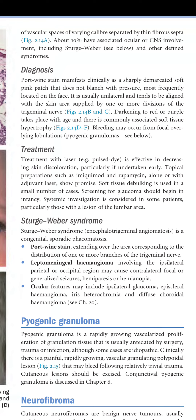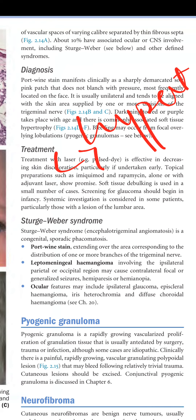Laser is the treatment of choice for port wine stain. Topical preparations such as imiquimod and rapamycin, alone or with adjuvant laser, show promising results. Soft tissue debulking is used in a small number of cases. Screening for glaucoma should begin in infancy. Systemic investigation is considered in some patients, particularly those with lesions in the inner lumbar area.